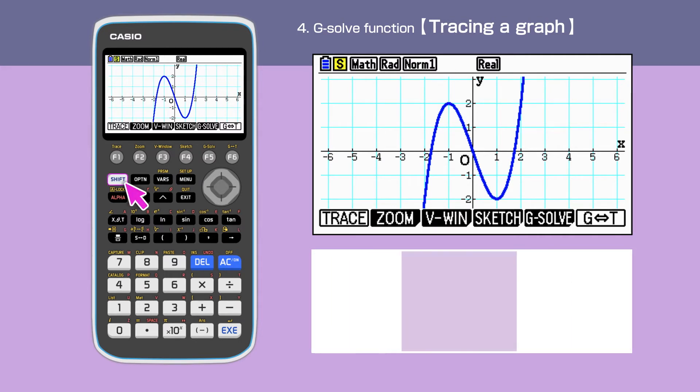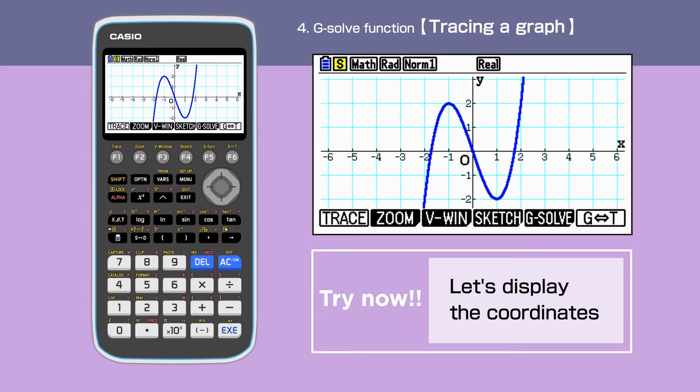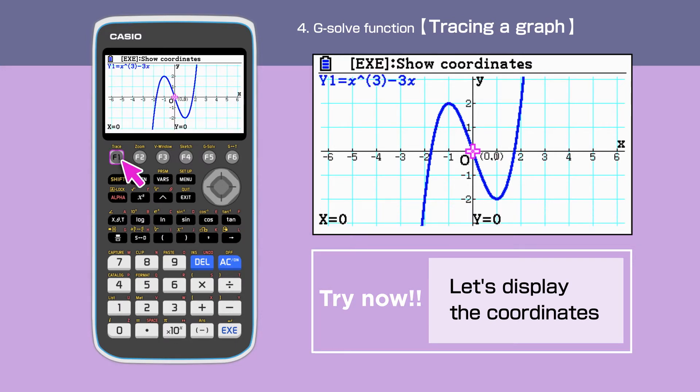Press SHIFT to open the command menu, then press F1 to select trace function. The cursor is displayed in pink, and the coordinates are shown at the bottom of the screen.